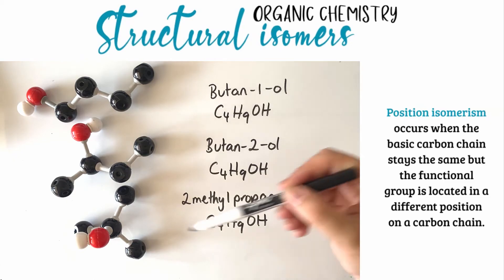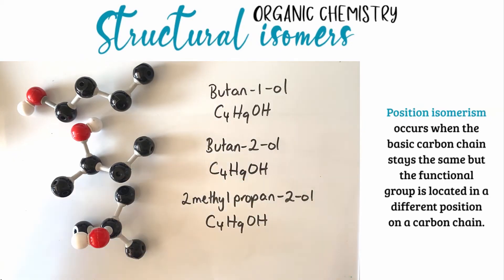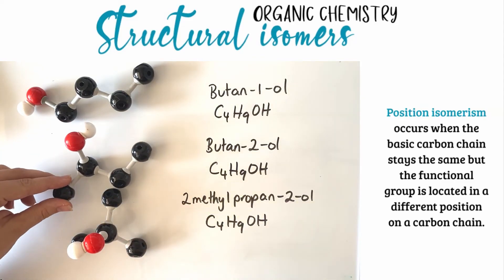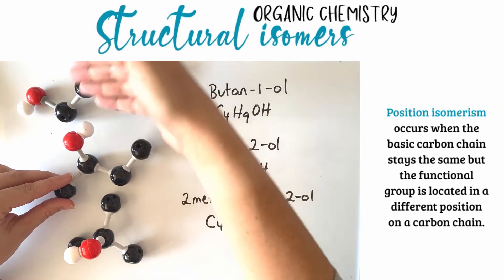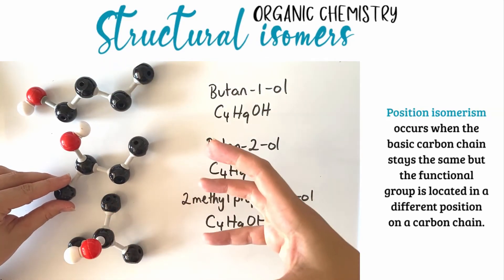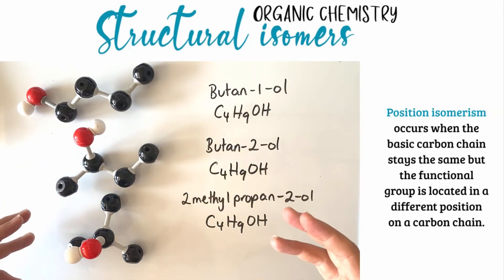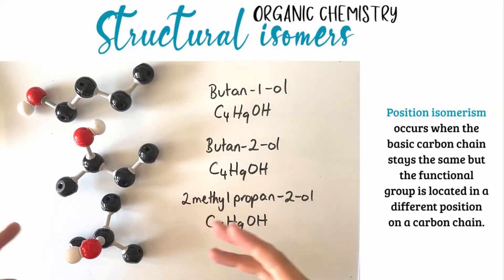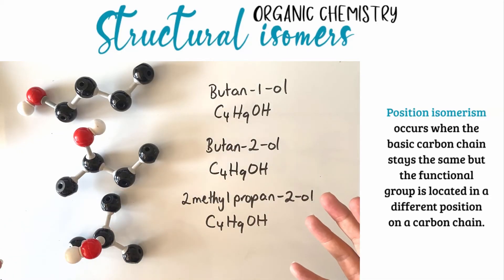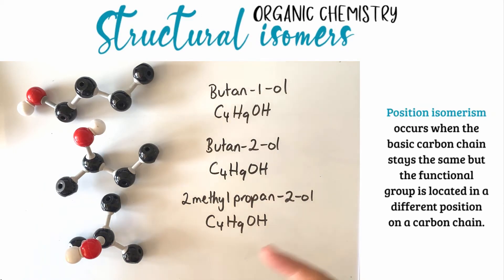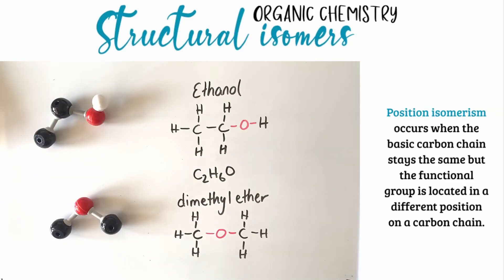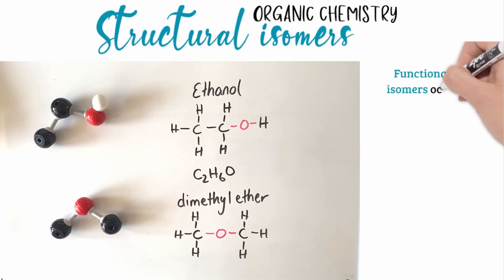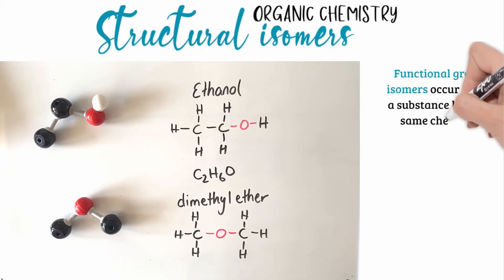The chemical formula for each of these three molecules is exactly the same, but because the position of the functional group has changed from one carbon to another, the structure of the molecule is different. Therefore these molecules will exhibit slightly different properties and behave slightly differently. This type of isomerism is called position isomerism because the position of the functional group has changed.